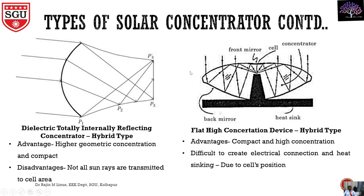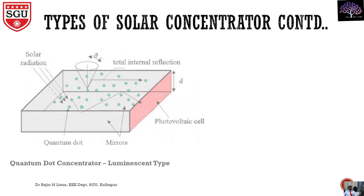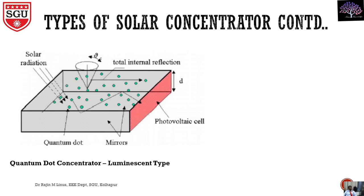The heat sink arrangement also needs to be properly organized based on the focus, which is very difficult. That is the main disadvantage of the flat high concentration device. The last one will be the quantum dot concentrator, otherwise called the luminescent type.